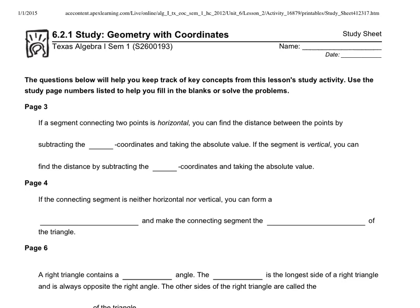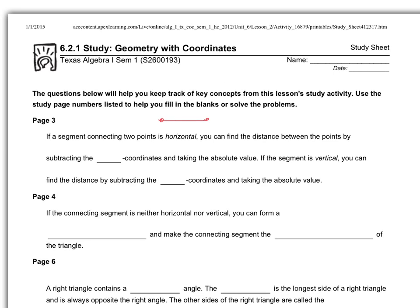So if we have a line segment that's horizontal, which means it goes straight across from left to right, then we can find the distance between those points by subtracting the x coordinate and taking the absolute value. When they talk about absolute value, all that means is that in the end you're going to make the number positive. That's what absolute value means.